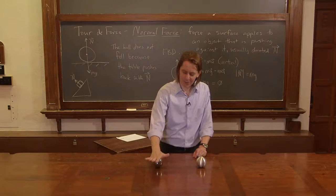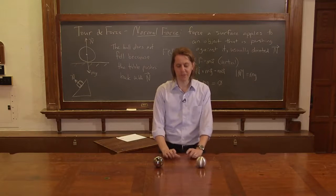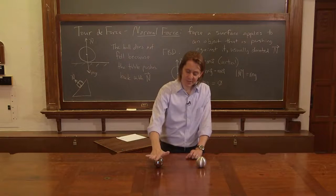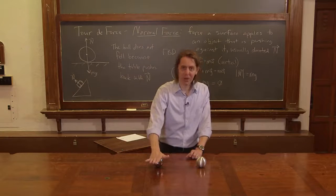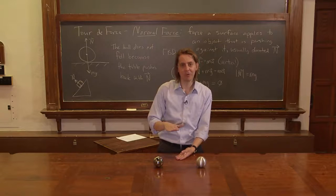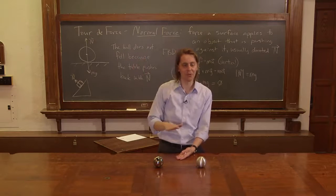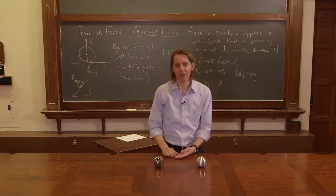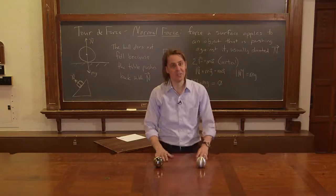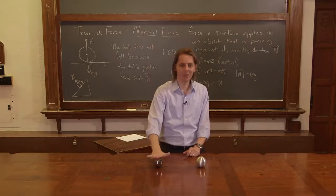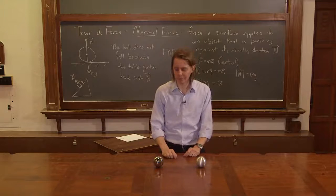One way to think about it that I think is helpful is to think of a solid object as a really, really, really stiff spring. The reason that this normal force can respond is you actually are compressing the table a little bit. And when you compress the table, the spring force, which we'll get to on the tour de force, can grow or shrink to whatever you need to make it stop. So the table isn't sentient. It's not applying a normal force that it needs to apply to keep it from moving. It's actually just responding kind of like a spring or like an elastic material.